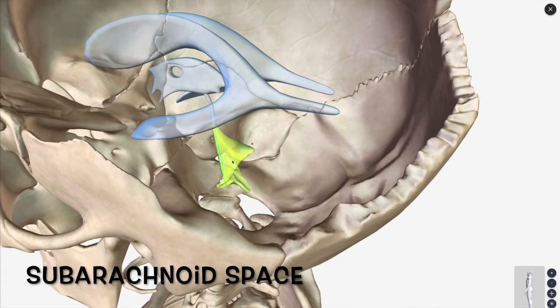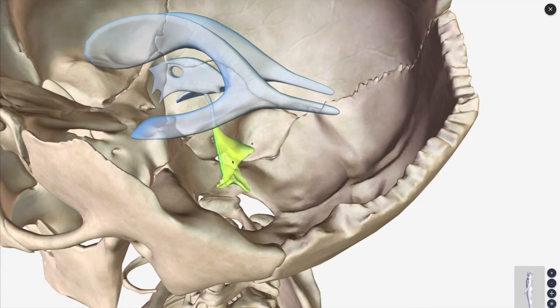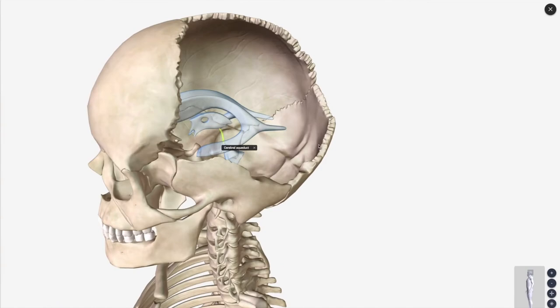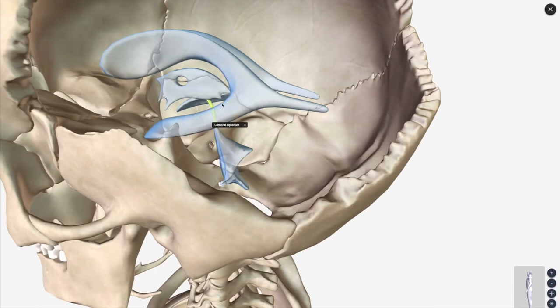Certain parts of the CSF pathway are going to be narrow. What happens if, for example, we have a six-month-old boy and we're blocking the cerebral aqueduct? What could happen? If you block the cerebral aqueduct, the third and the lateral ventricles are going to start to swell.